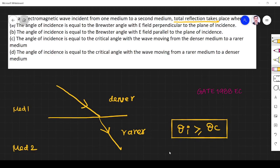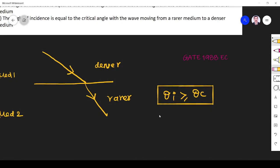Wave should go from denser to rarer medium. Wave propagation should be from denser to rarer medium and angle of incident must be greater than critical angle.